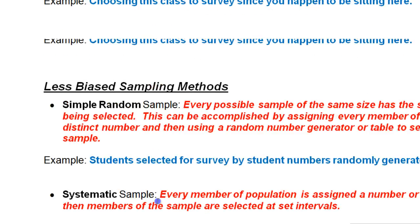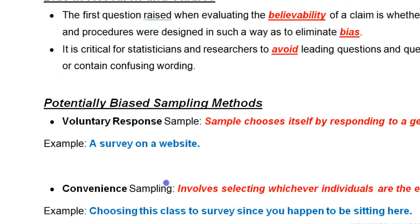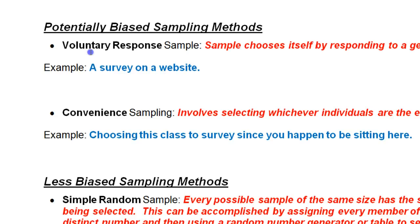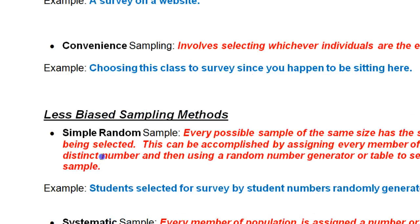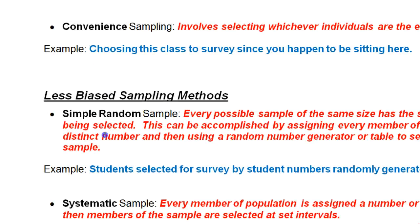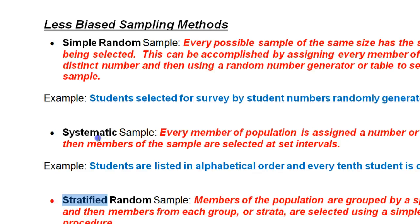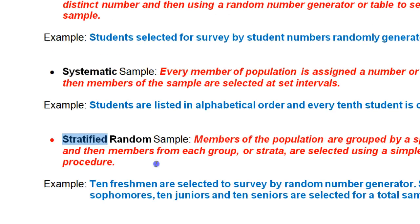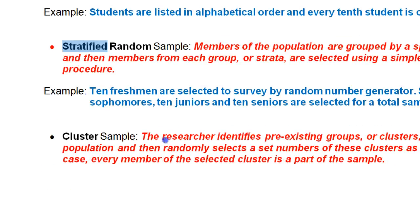So just to review, the six methods were: voluntary response, convenience, simple random, systematic, stratified random, and cluster.